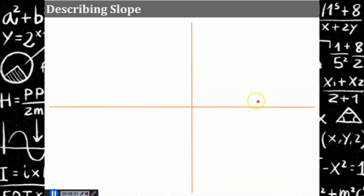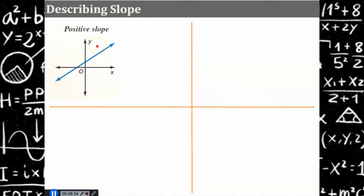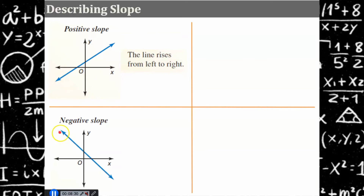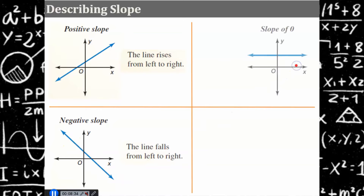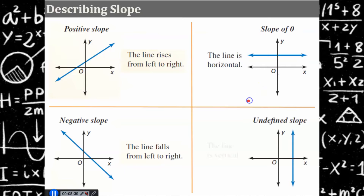Let's review how we can describe slope. You could have a positive slope — the line would rise from left to right. A negative slope — it would fall left to right. A zero slope tells you that you have a horizontal line, and an undefined slope describes a vertical line.